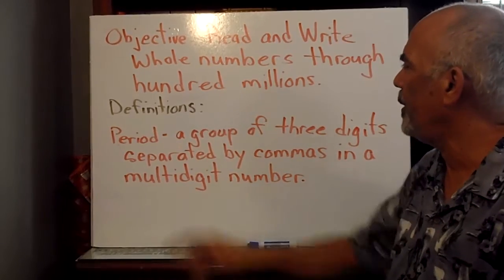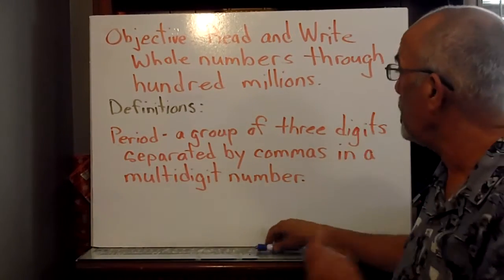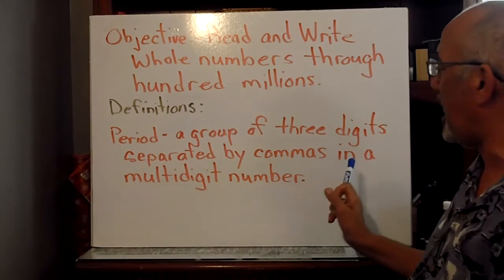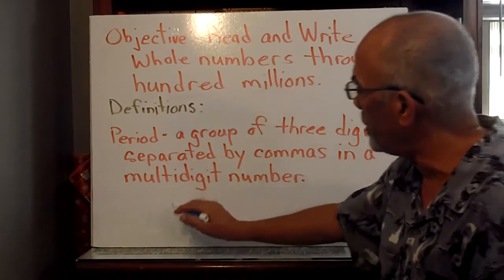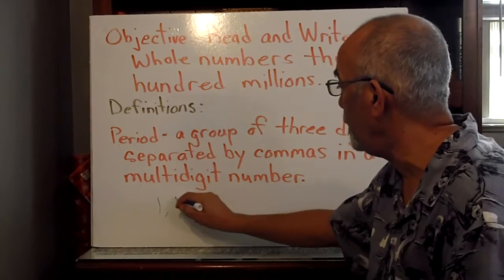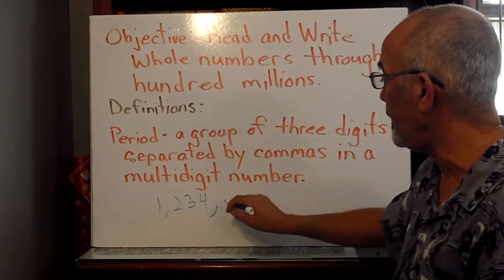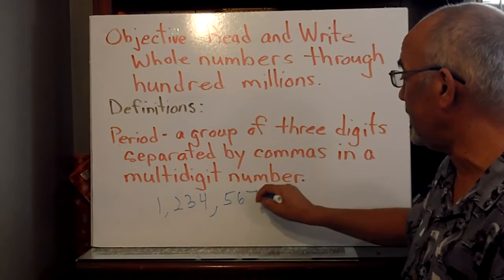A couple of definitions. First one is a period. A period is a group of three digits separated by a comma in a multi-digit number. For example, one million, two hundred and thirty-four thousand, five hundred and sixty-seven.